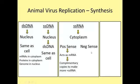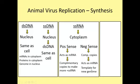Negative sense RNA cannot act as an mRNA. We need to make a complementary copy that can act as an mRNA. Cells do not have enzymes to make RNA copies from RNA, but because this has to happen before any viral proteins can be made, the virus has to bring the enzyme in the capsid. Then from the complementary copies, they act like mRNAs, and they also act like a template for the new negative sense genome.